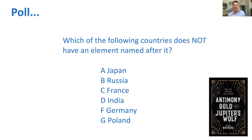We'll start with a poll. Which of the following countries does not have an element named after it? There was indeed an element named after Japan in 2016, one of the recent ones — only a couple of atoms ever made — but that is not the right answer.